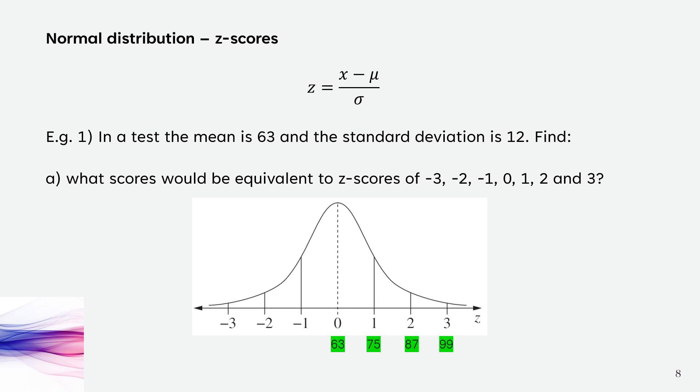To go in the reverse, we subtract 12. So from 63, subtracting 12 gets you 51. Subtracting 12 again gets you 39, and subtracting 12 again gets you 27. That's how we come up with our z-scores.